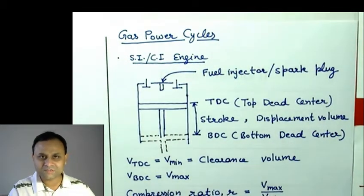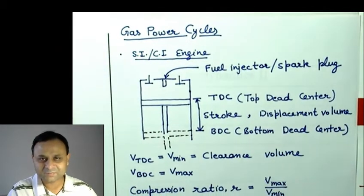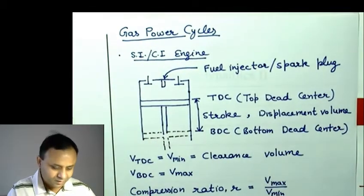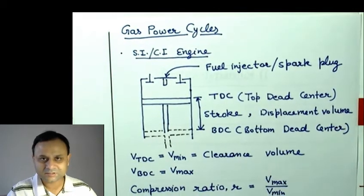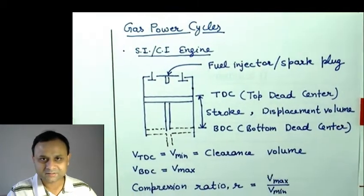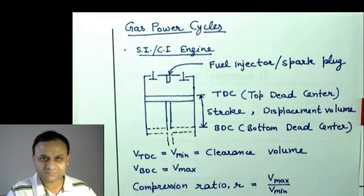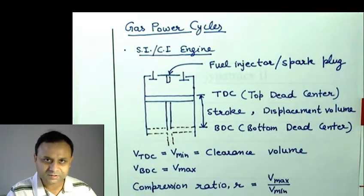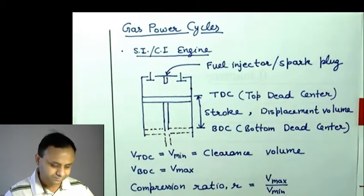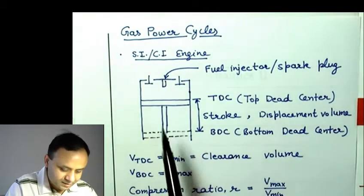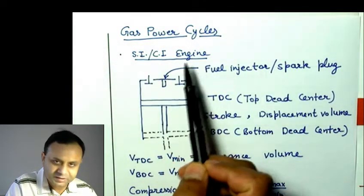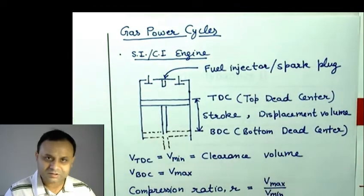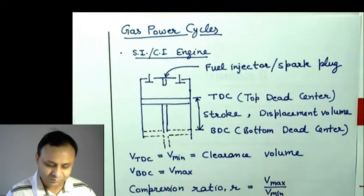Your life will be easier compared to Thermo 1 because in gas power cycles the working fluid is always in the gas phase — you only deal with ideal gases. There is no switching between liquid, superheated vapor, and two-phase mixtures requiring heavy use of property tables. Let us look at a brief description of spark ignition and compression ignition engines.